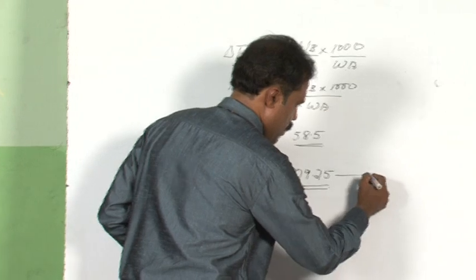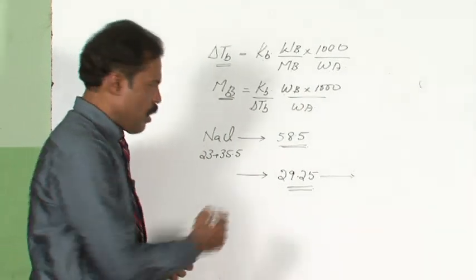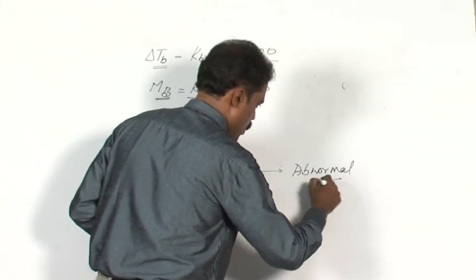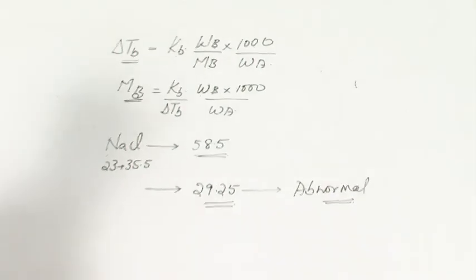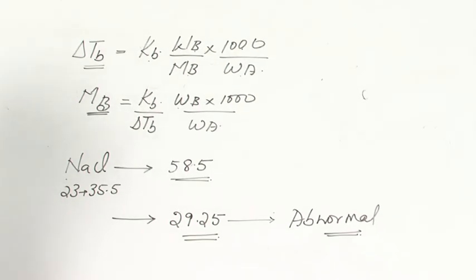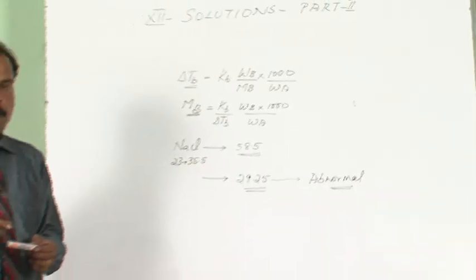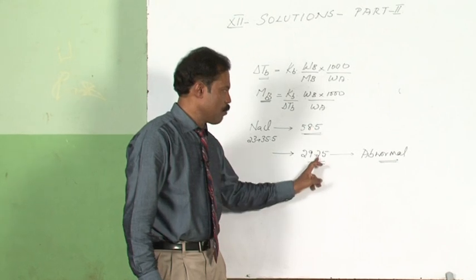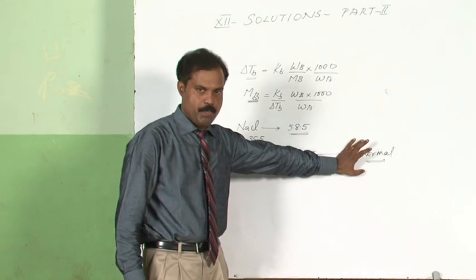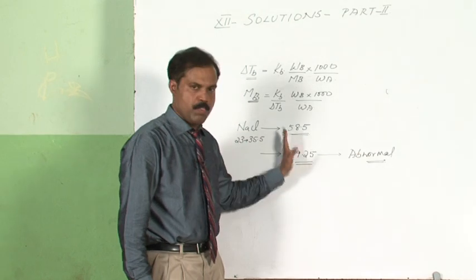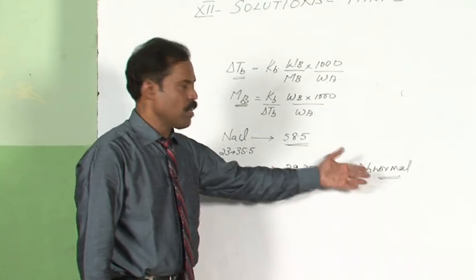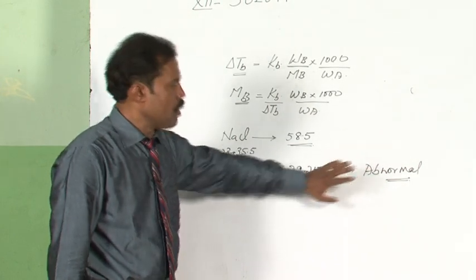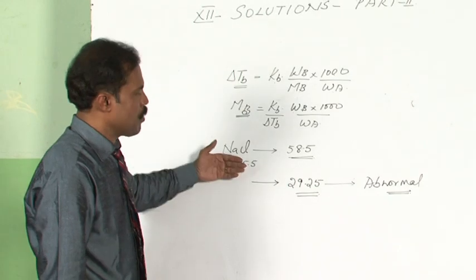This calculated molecular weight is wrong — it is half of the actual molecular weight. We call it abnormal. Obviously, the question is: is this happening with every substance or only with some? This does not happen with all substances. Many substances give the actual normal molecular weight without any error, but there are some substances where you get an error.